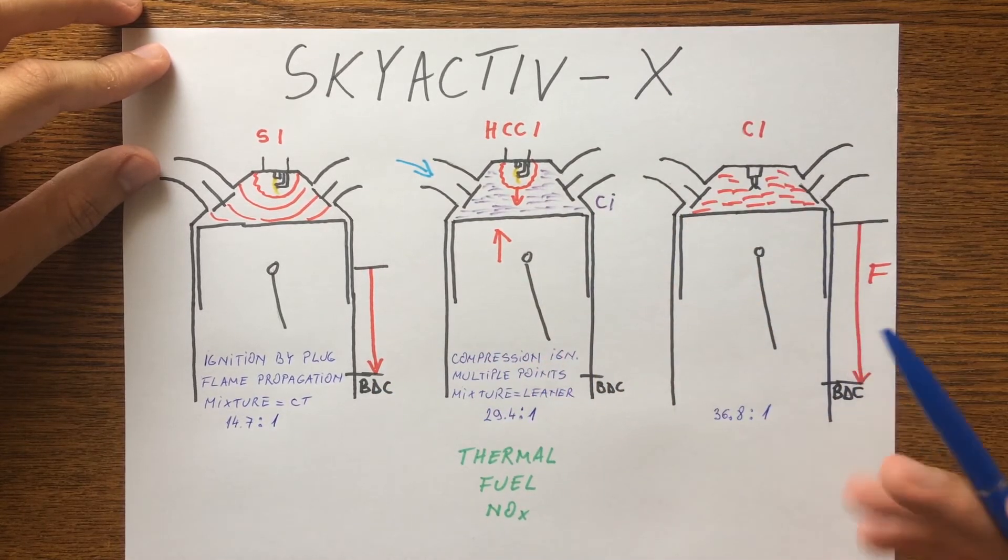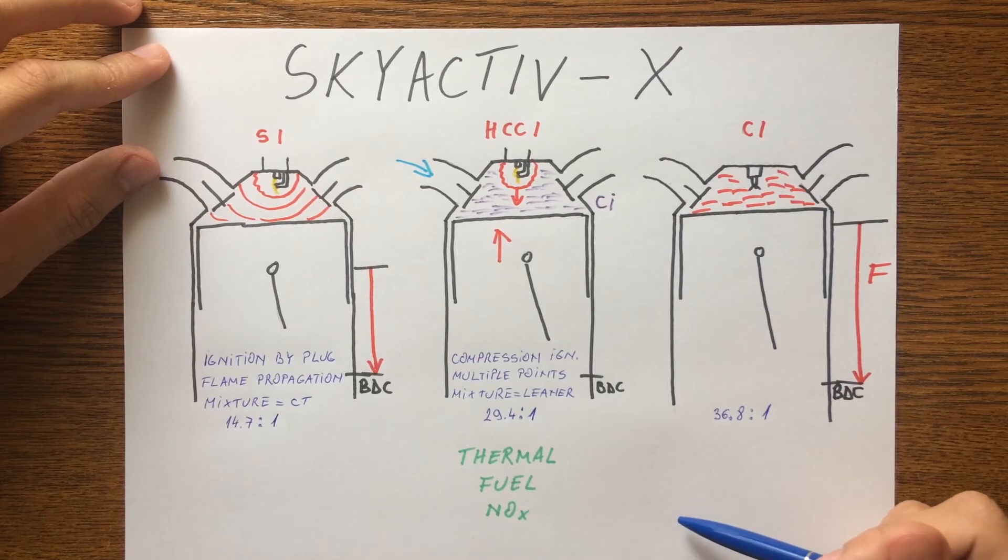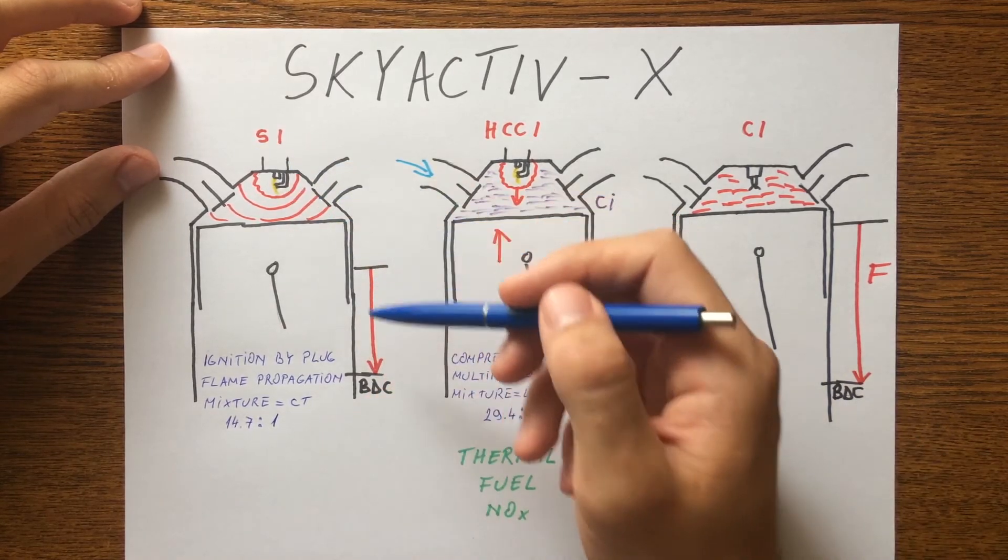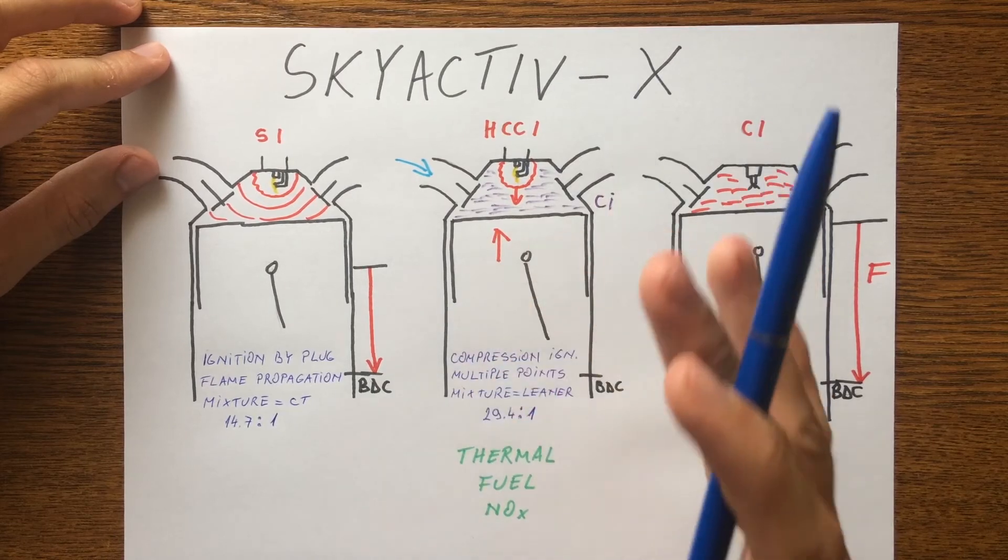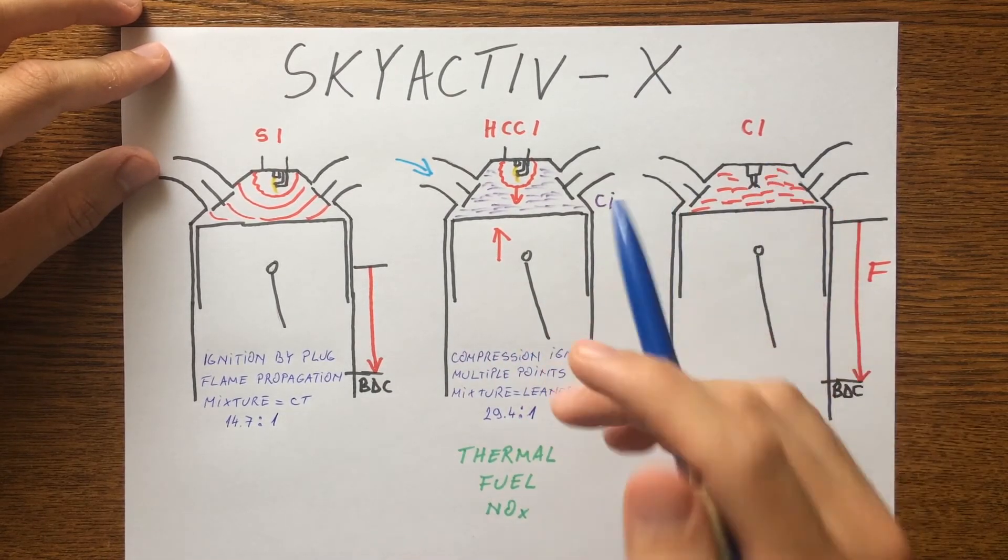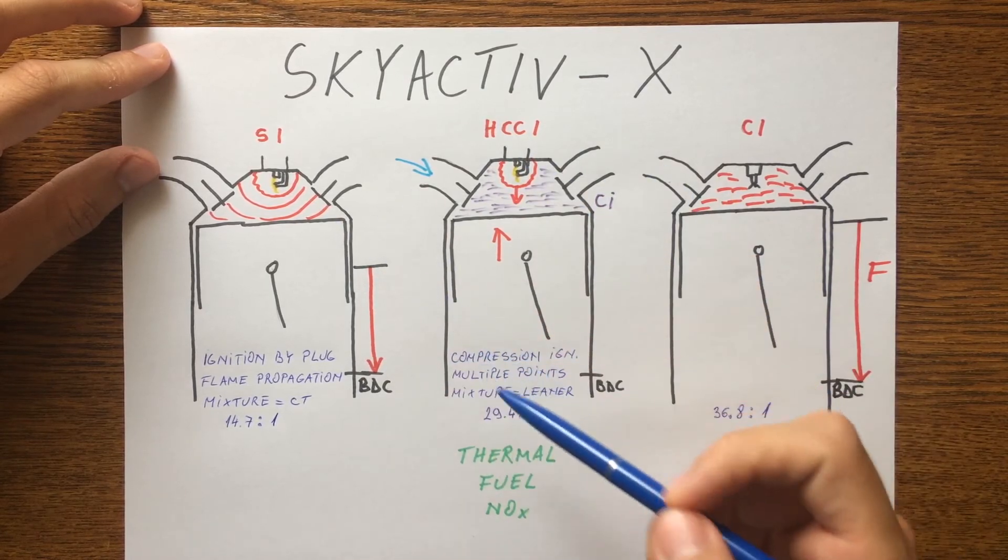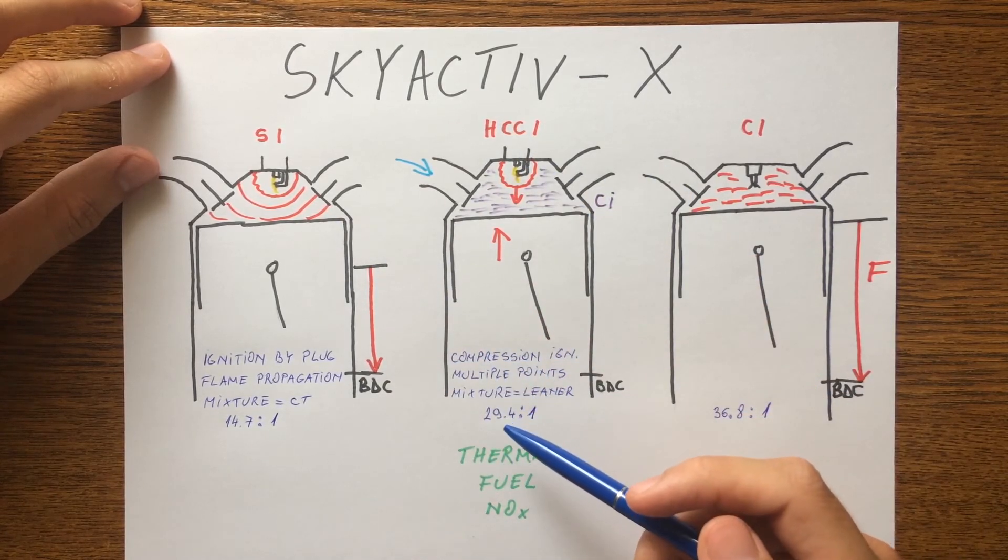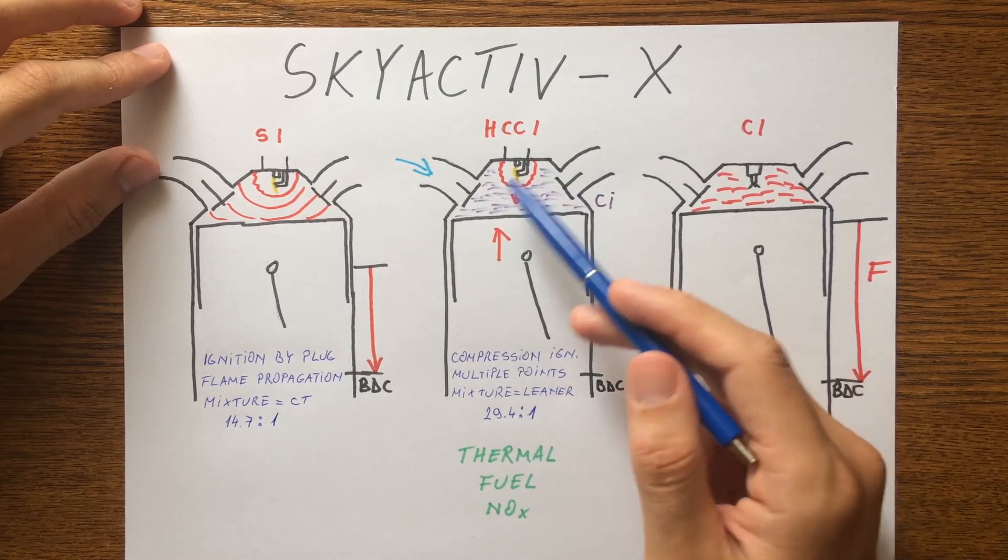So the breakthrough point of Mazda is a technique to completely control the switch between those two combustion types and expand the operating region of compression ignition.